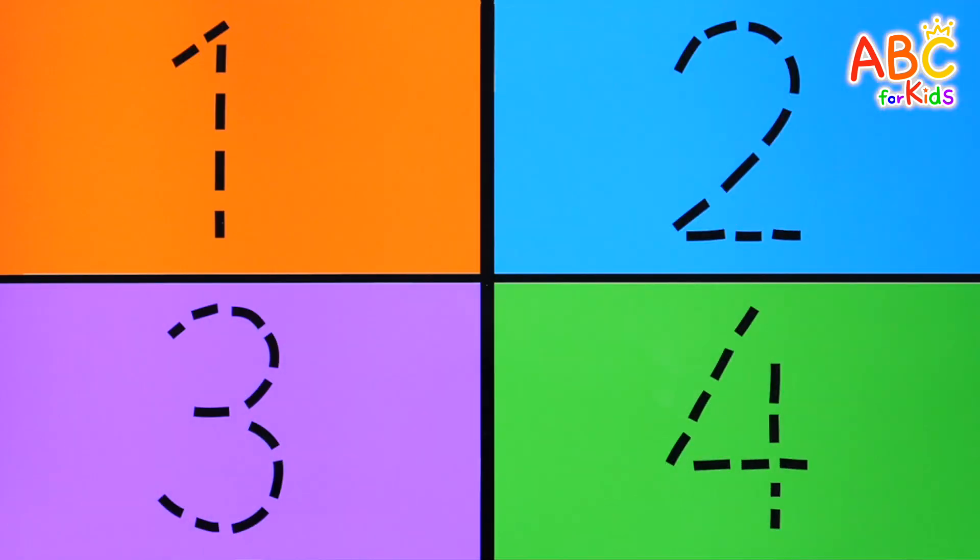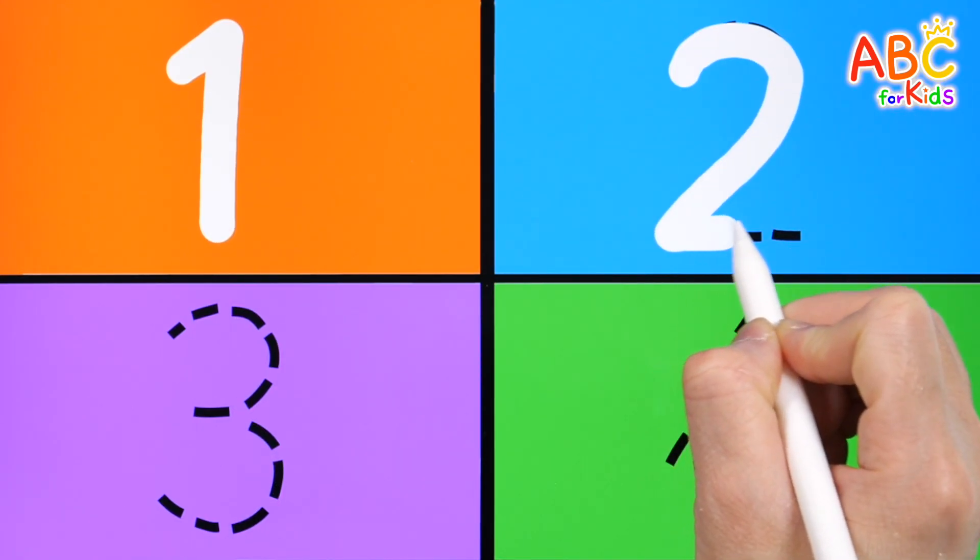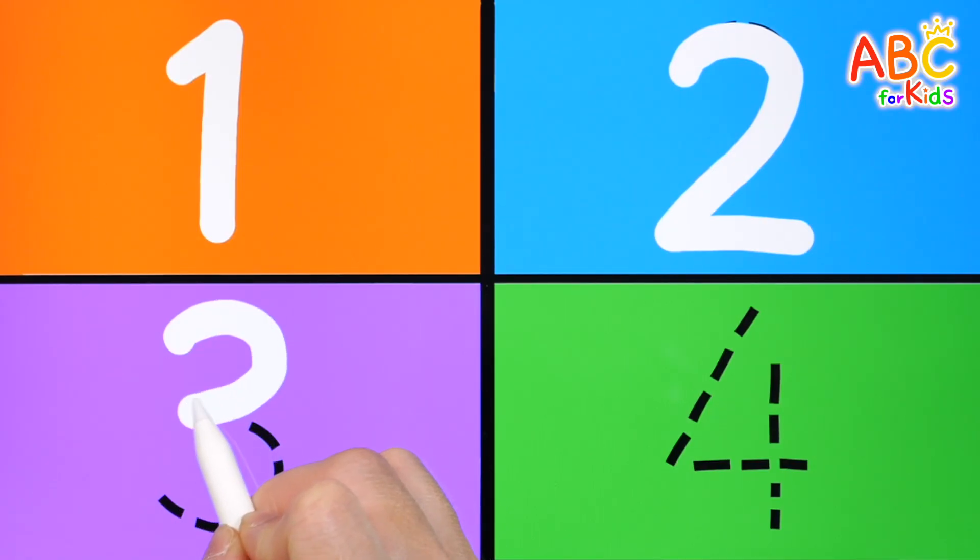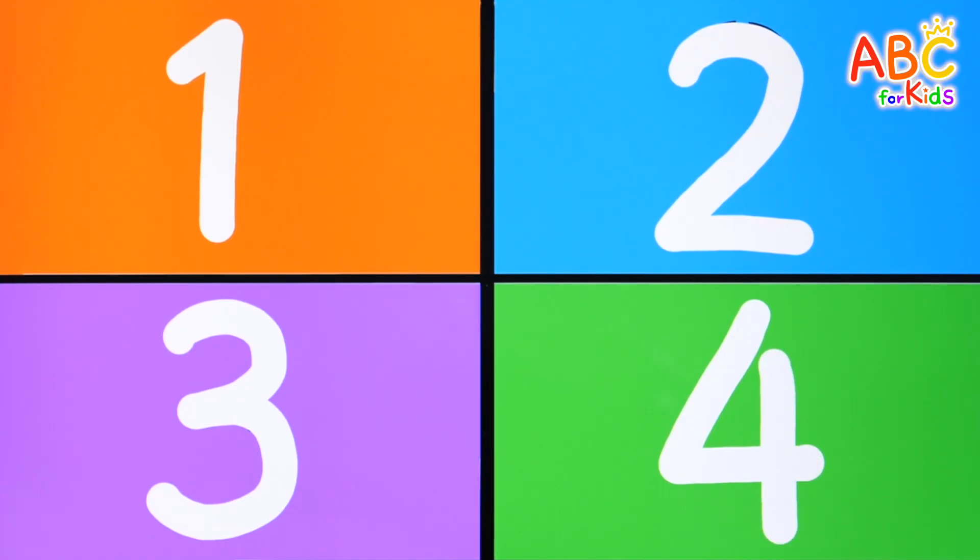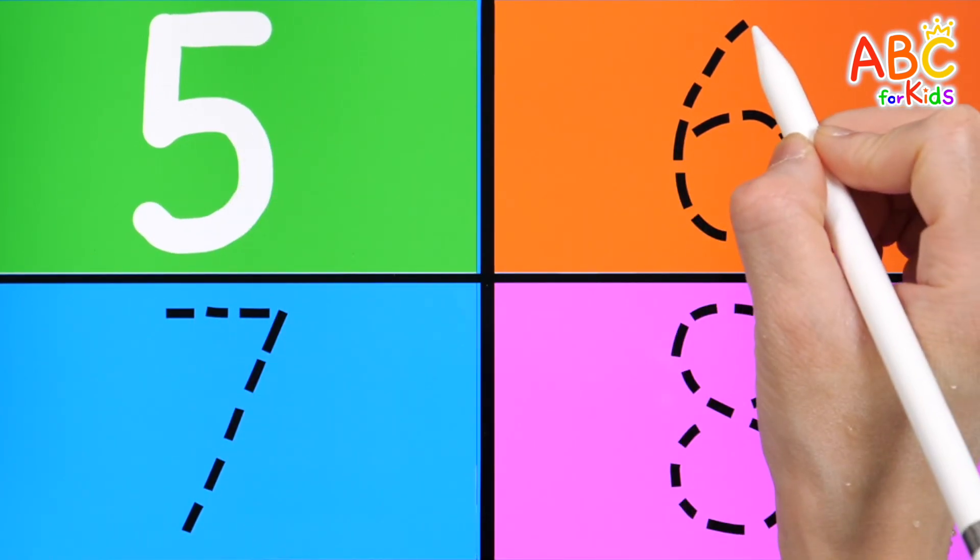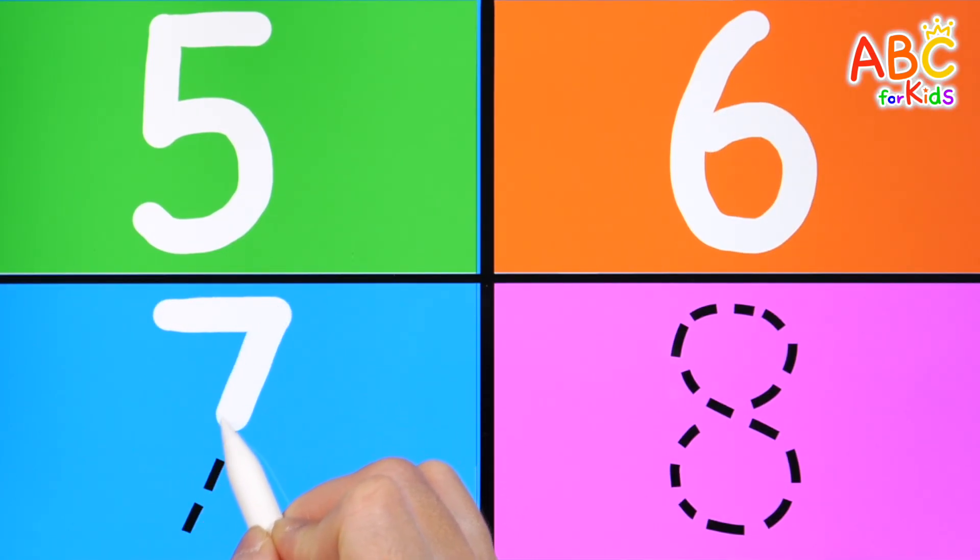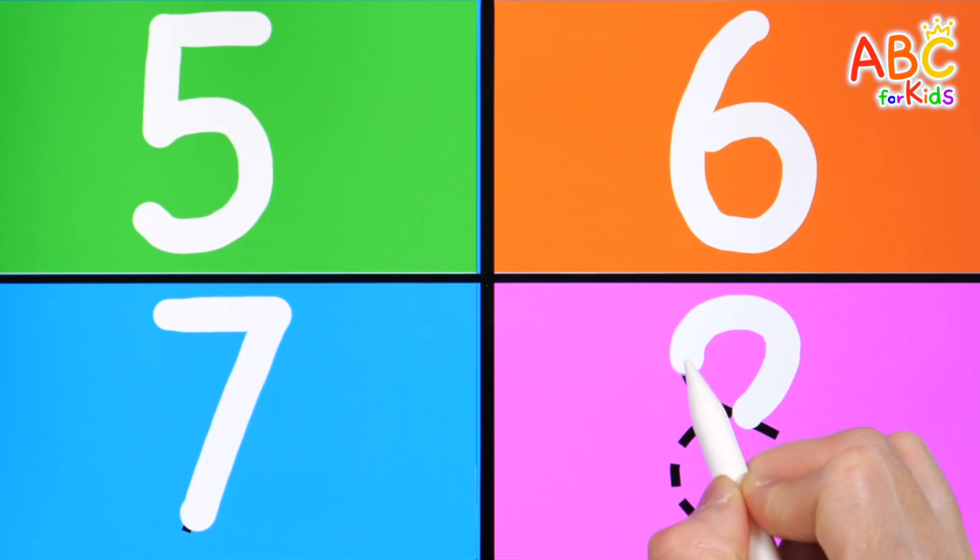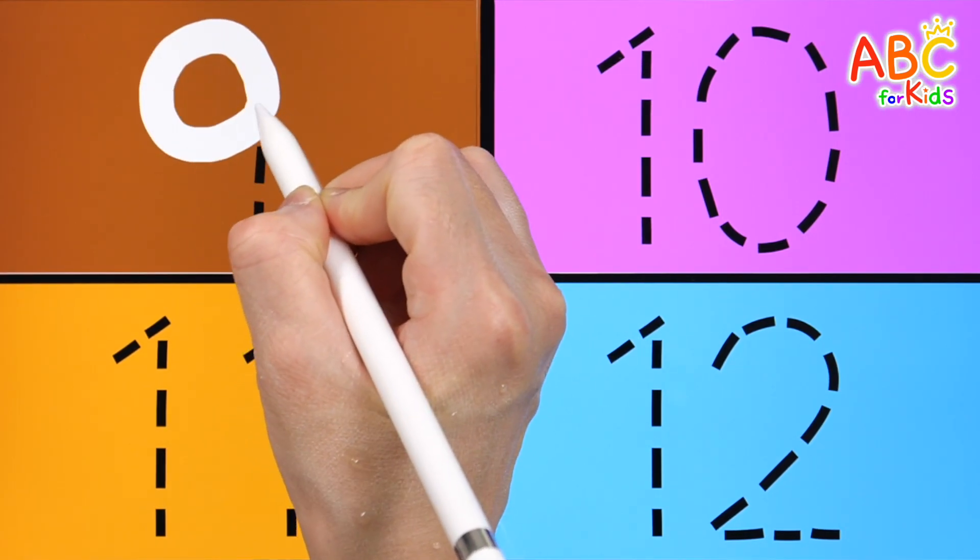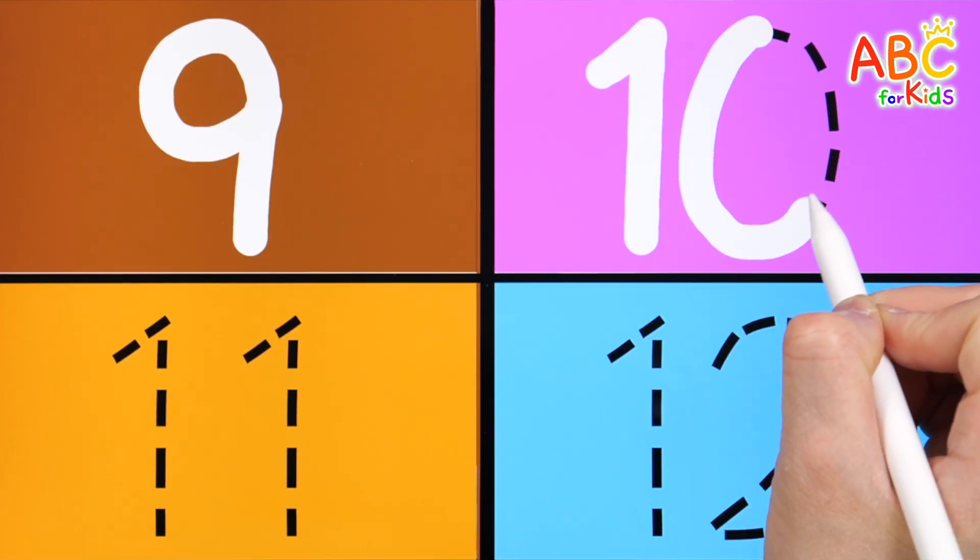Read the numbers written on the color board. 1, 2, 3, 4, 5, 6, 7.